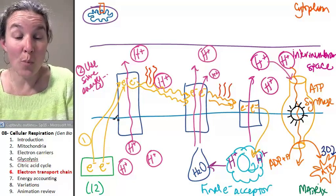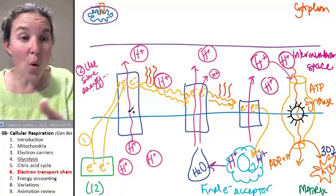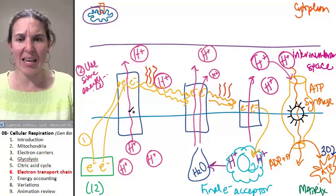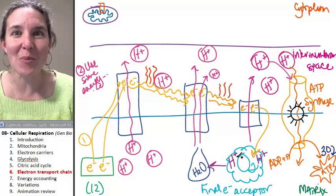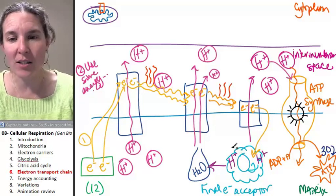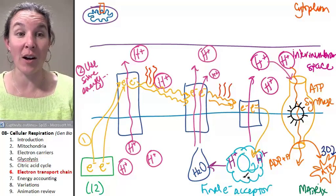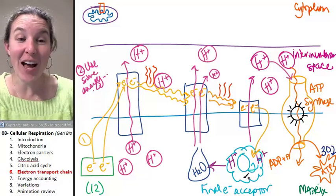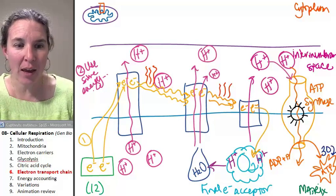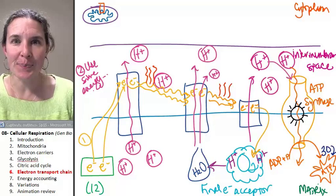If you don't have oxygen as your final electron acceptor, you're going to get a logjam, and your high-energy electron carriers aren't going to have anywhere to put their electrons. So, the whole thing is going to back up. You're not going to get all that energy, because it is anaerobic respiration, not aerobic. As long as you have oxygen, you've got aerobic respiration going on, which is...